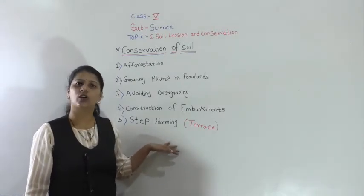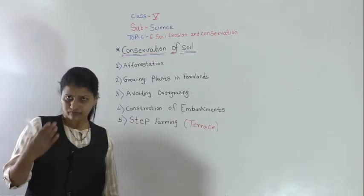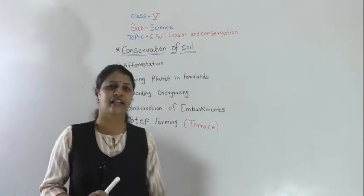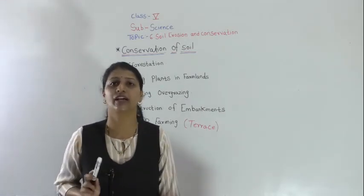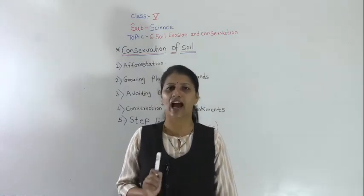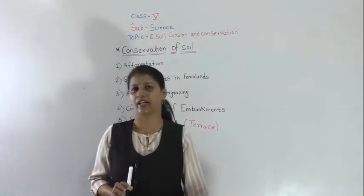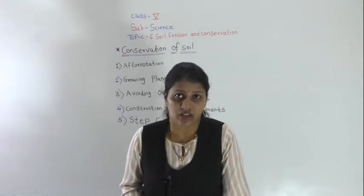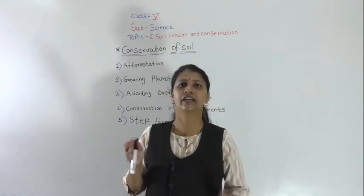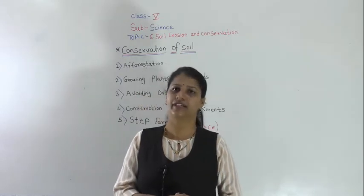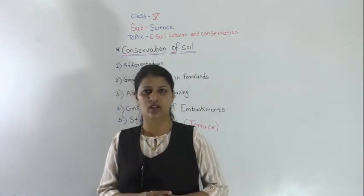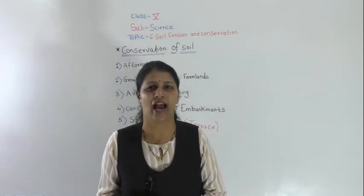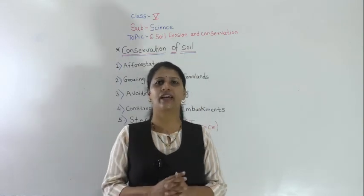The fifth method is strip farming, also called terrace farming, mostly practiced in hillside areas where large-scale rainfall affects the soil. Soil is a natural resource that takes millions of years to form, so we must take good care of it. Today's work: read the lesson twice, write out difficult words twice in your notebook, and practice drawing the diagram of the layers of soil.